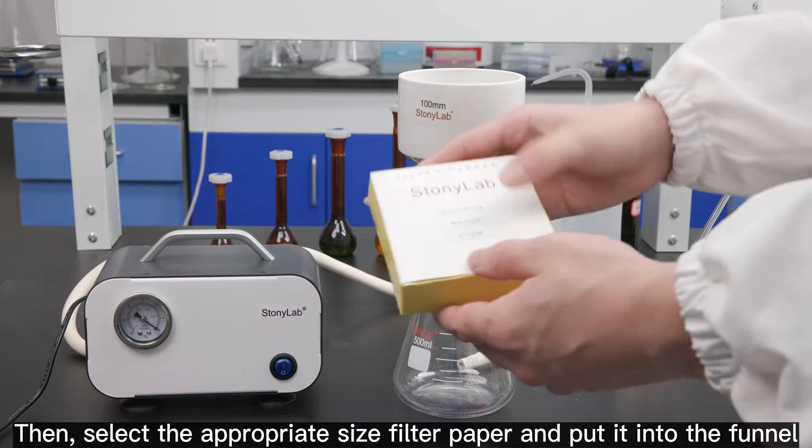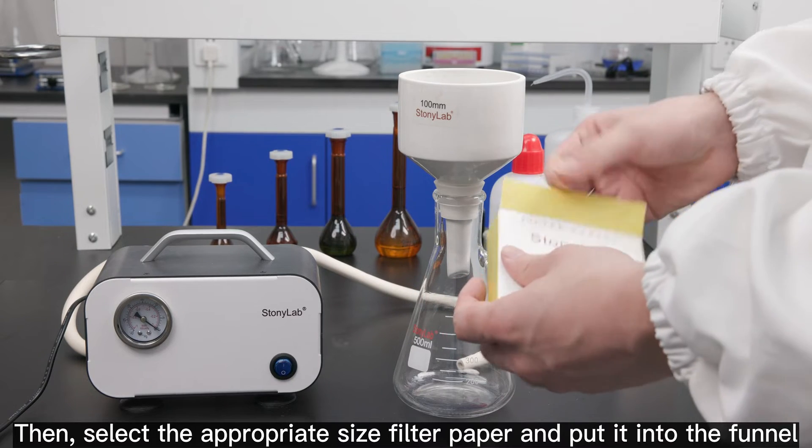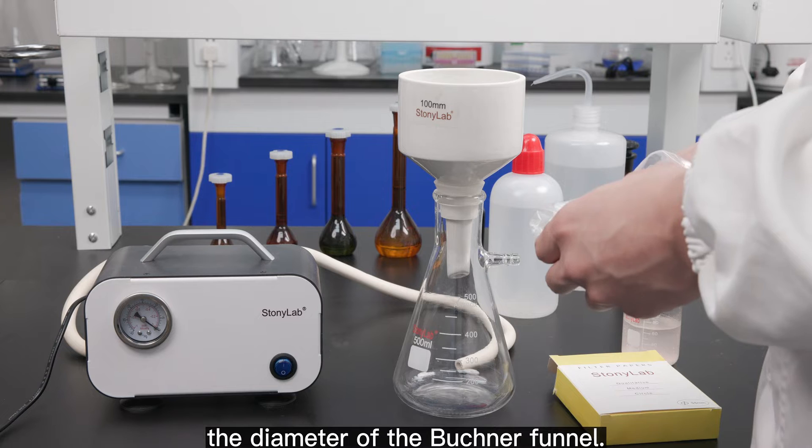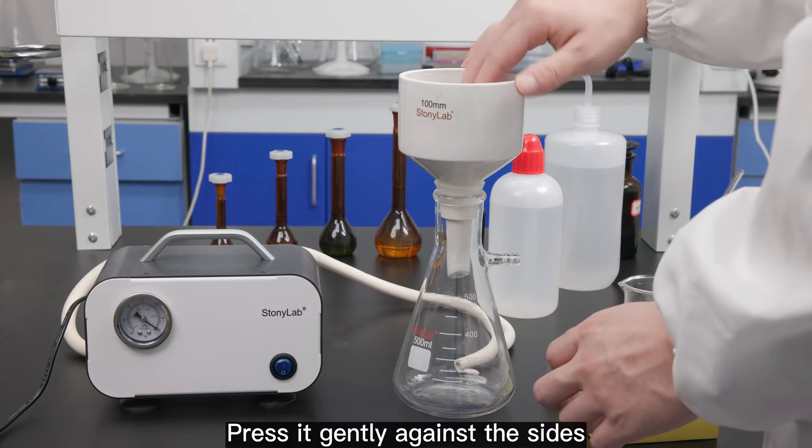Then, select the appropriate size filter paper and put it into the funnel. The filter paper should be slightly larger than the diameter of the Buchner funnel. Press it gently against the sides.